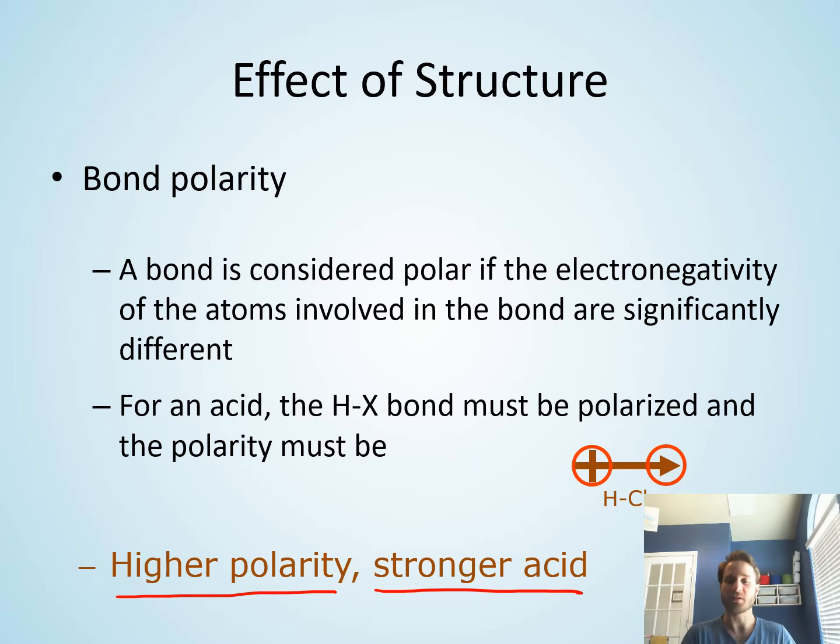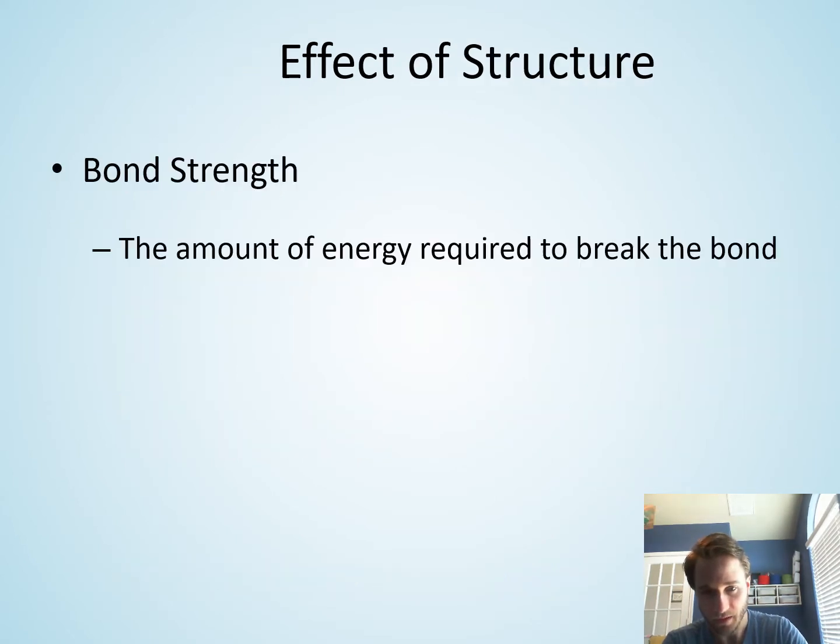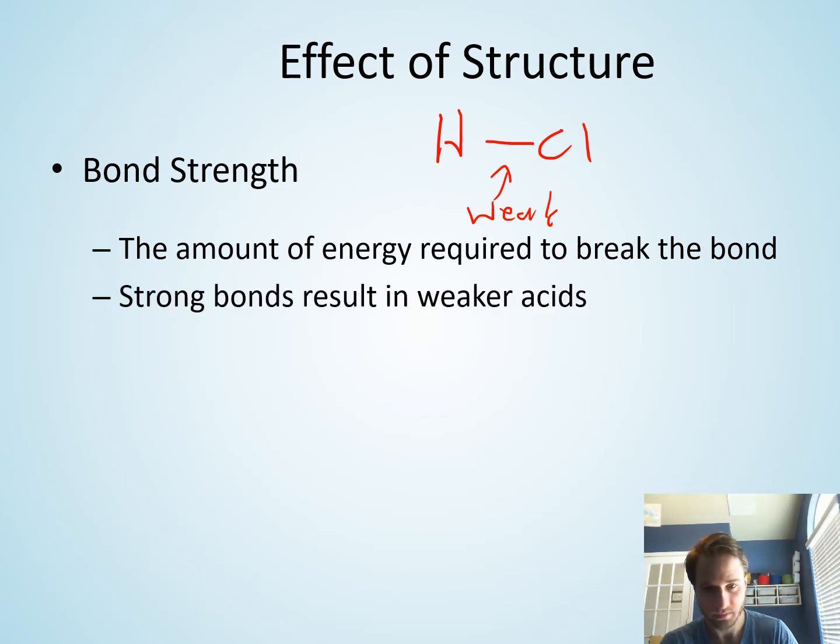Now, related to this is bond strength. The bond strength is the amount of energy required to break the bond. If we take HCl as an example, if this hydrogen-chlorine bond is weak and it's easy to break that bond, then it's very easy to form Cl- and H+ ions in solution. So the weaker the hydrogen-X bond is, the stronger the acid will be. And the stronger that bond is, the weaker the acid is going to be.